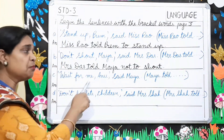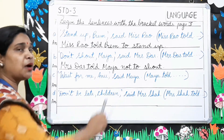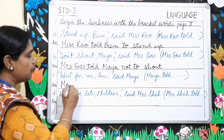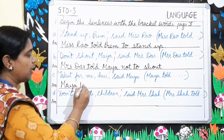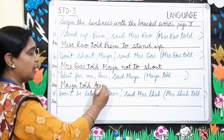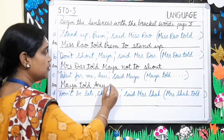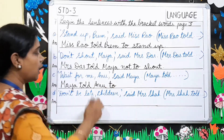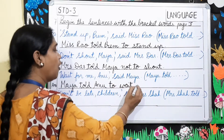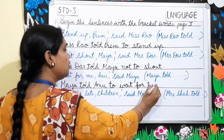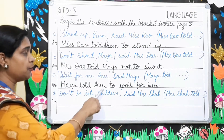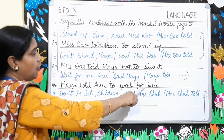Number C: 'Wait for me, Anu,' said Maya. Begin your sentence with 'Maya told.' Maya is telling this to Anu, so Maya told Anu — and you will make use of 'to.' Maya told Anu to wait for her. We will change 'me' to 'her.' So your answer is: Maya told Anu to wait for her.